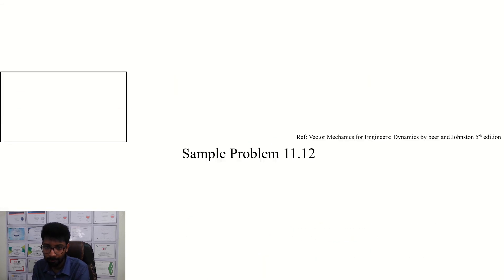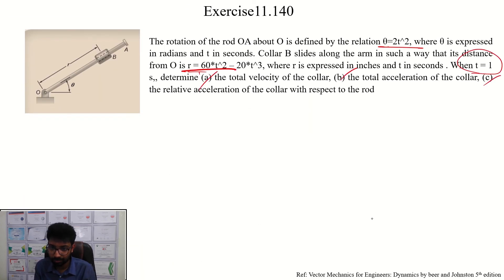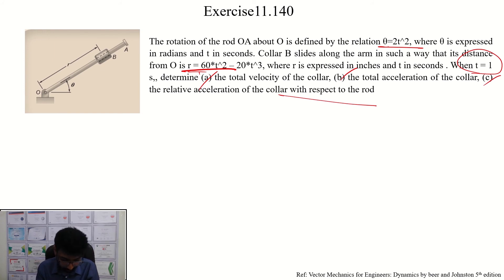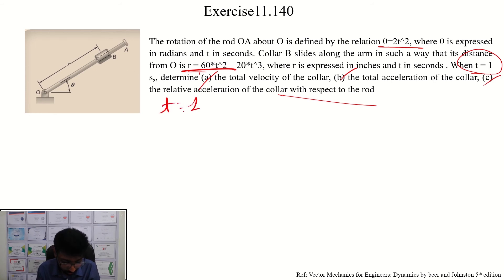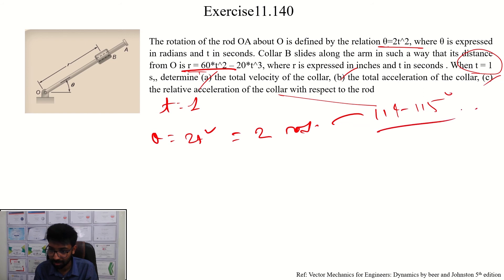Now we look at the acceleration. This is very simple. In this second problem, the time t equals 1 second. At t equals 1, theta equals 2t squared evaluated, giving two radians, which is basically 90 degrees.